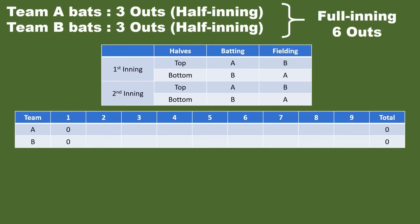Here after one inning the score is zero. After the second inning A scored one, B scored two, so the score is one to two. At the end of nine innings they look at the score. If A has five points, A won the match. If it's a tie then they keep playing one more inning until they have a winner.